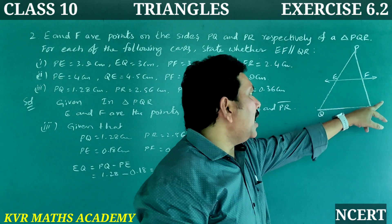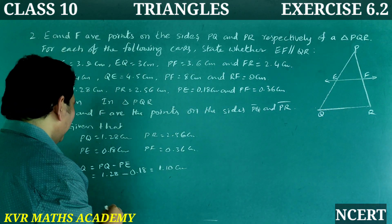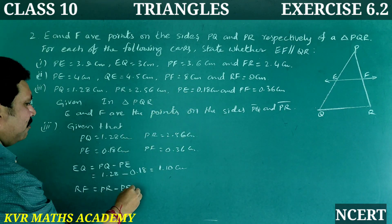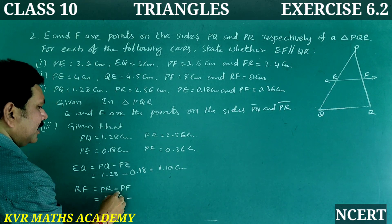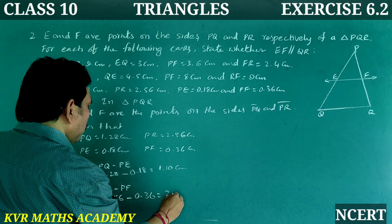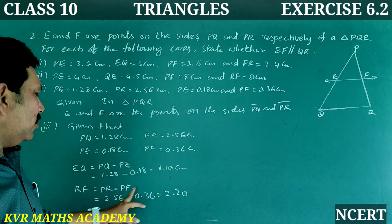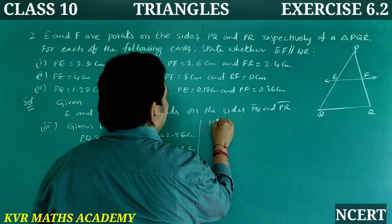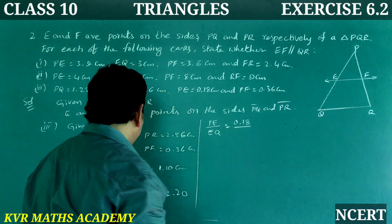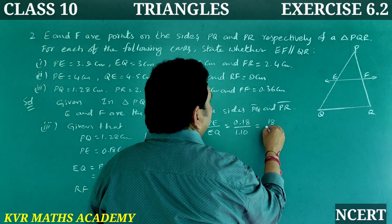We also need FR. FR equals PR minus PF: 2.56 minus 0.36 equals 2.20 centimeters. So EQ is 1.10 and FR is 2.20. Now PE by EQ: 0.18 by 1.10 equals 18 by 110. Simplifying: 9 by 55.